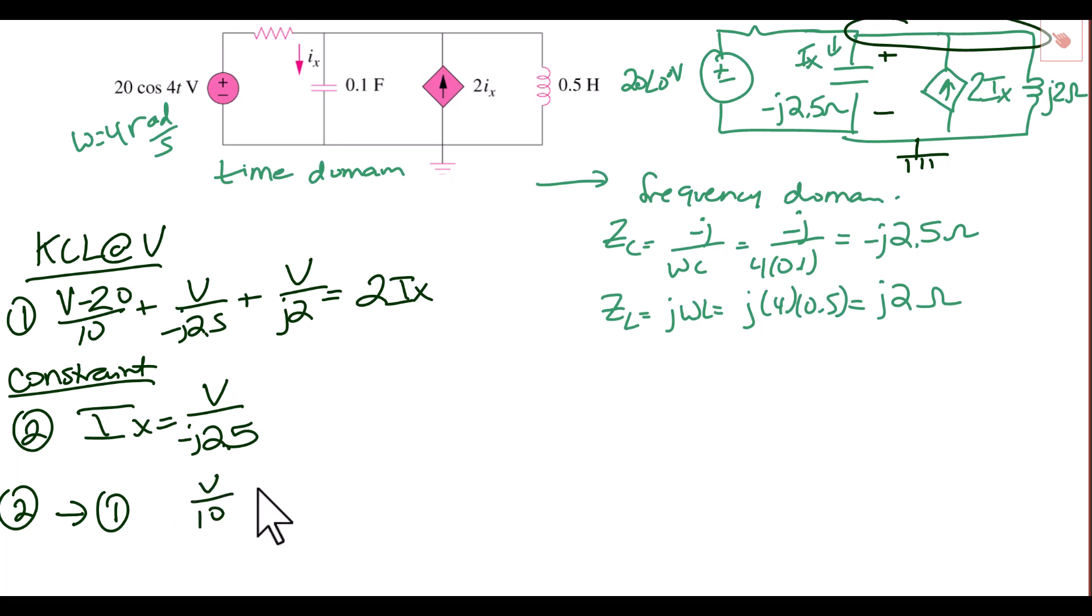And we're going to have V over 10 plus V over negative J 2.5 plus V over J 2 minus 2V over negative J 2.5 equals 20 over 10, which is 2.5.